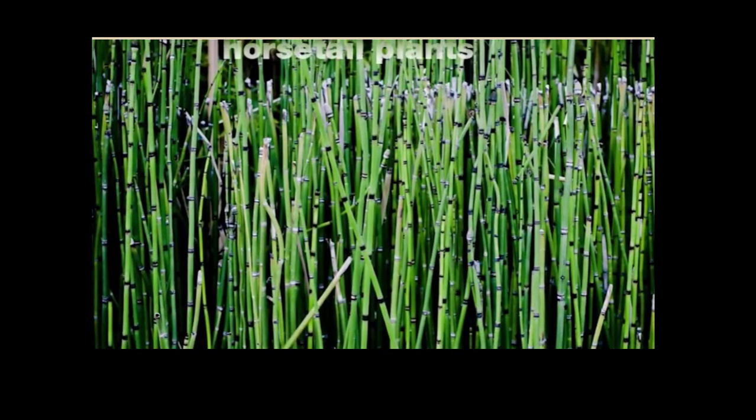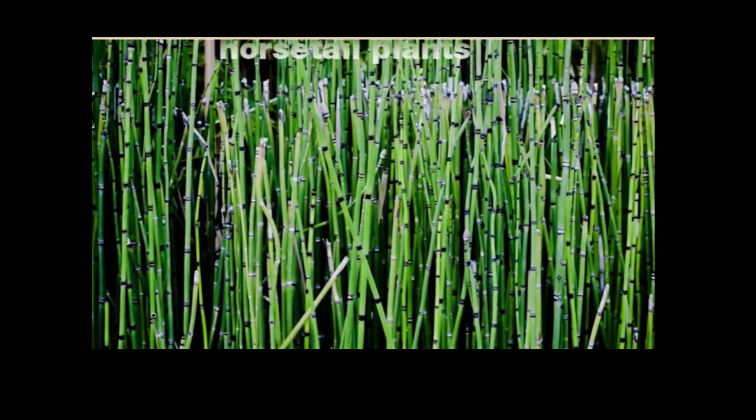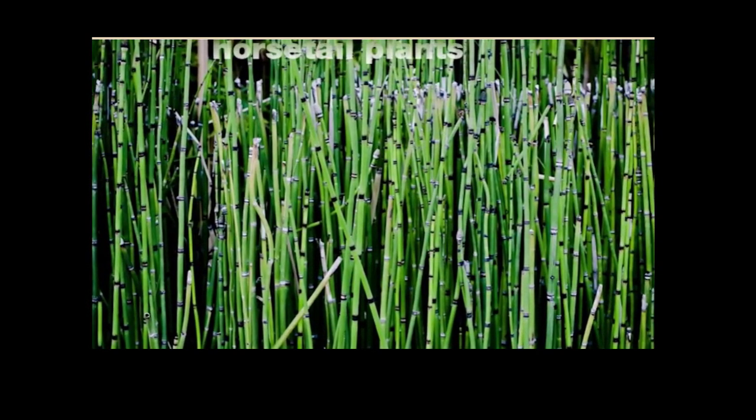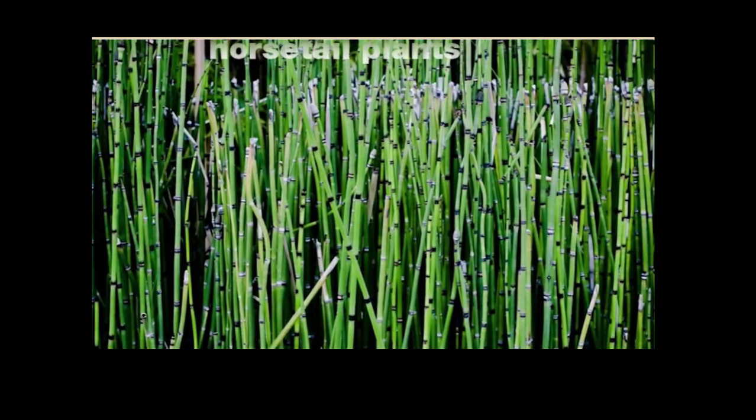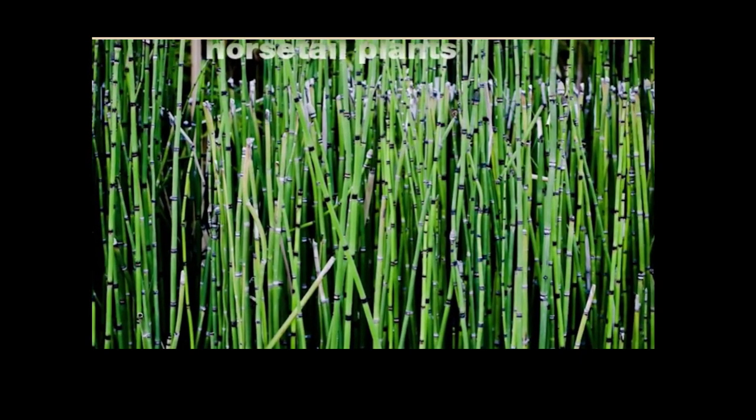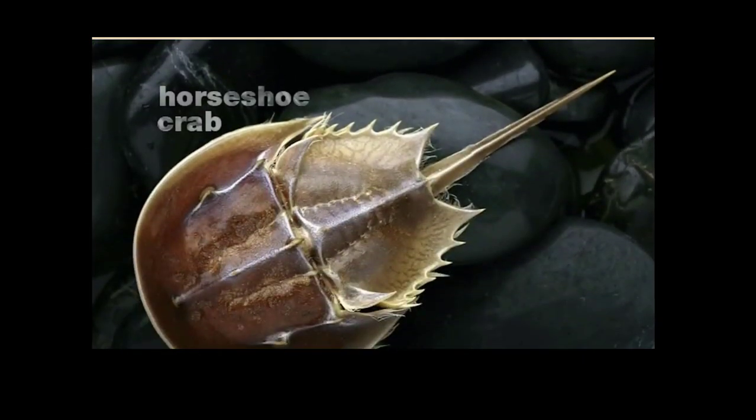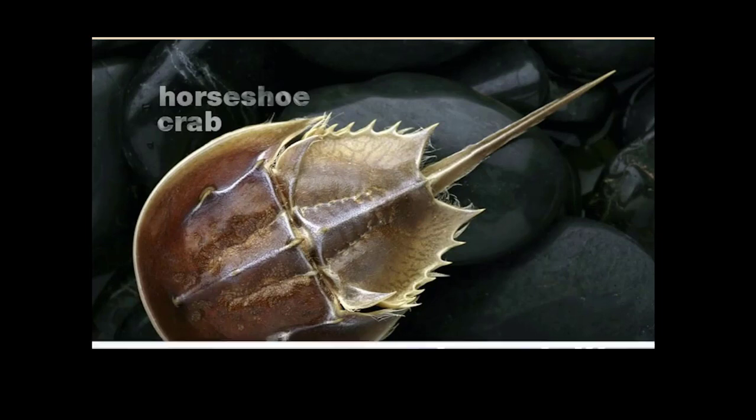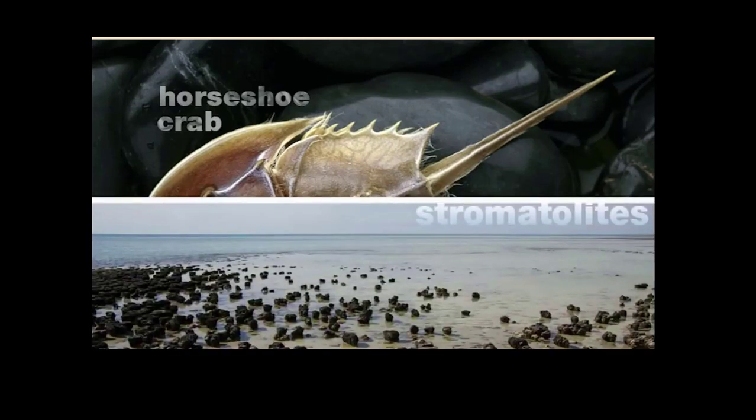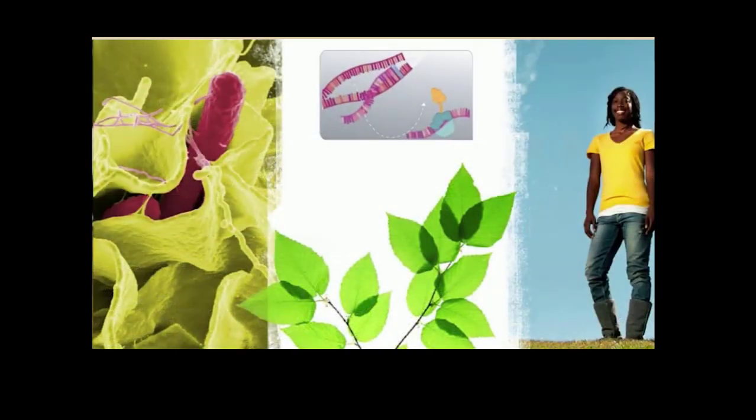Natural selection does not necessarily favor change. Many species alive today look identical to their ancient ancestors. Among these so-called living fossils are horsetail plants and horseshoe crabs, which resemble fossils that are hundreds of millions of years old. Modern cyanobacteria form mounds that resemble fossilized structures that covered the earth billions of years ago.